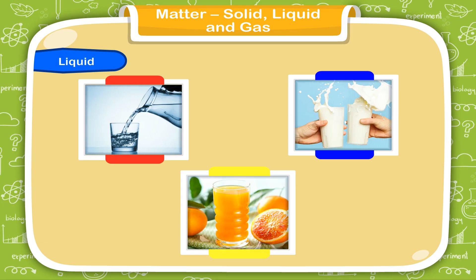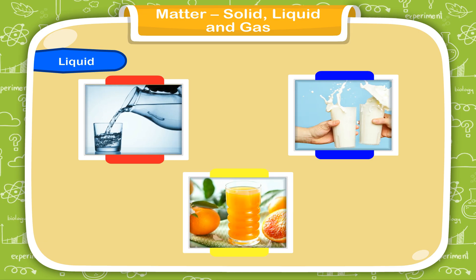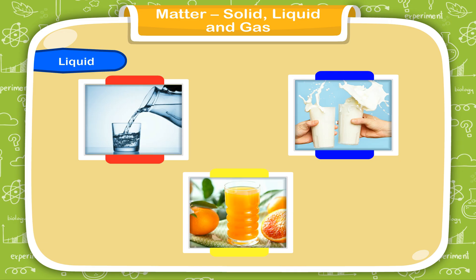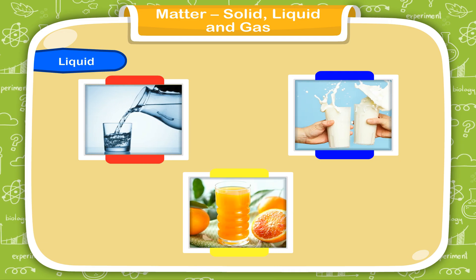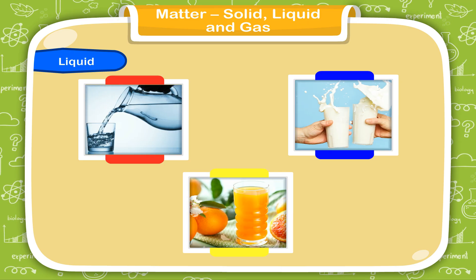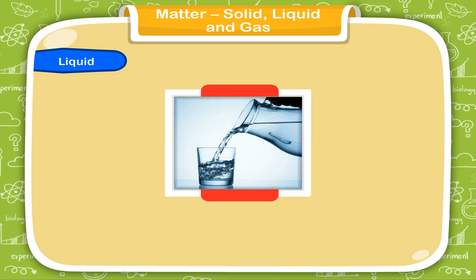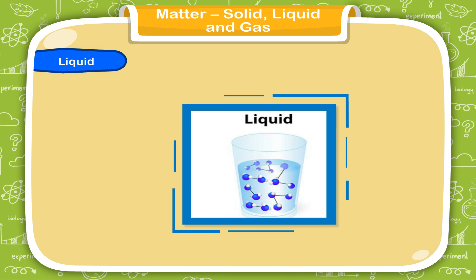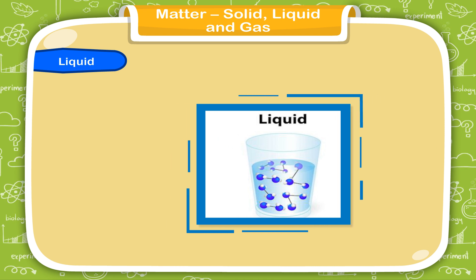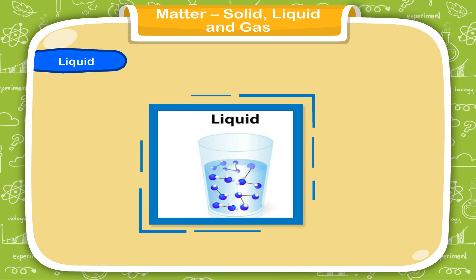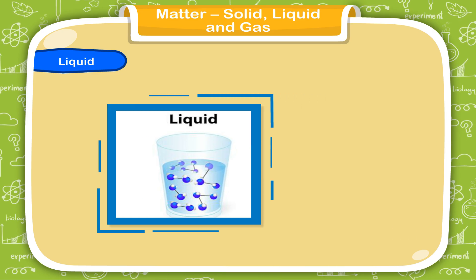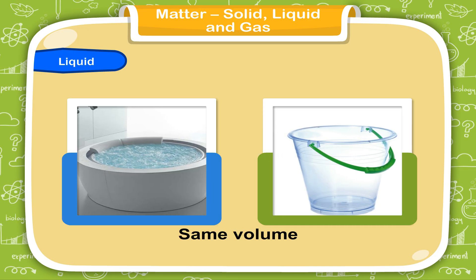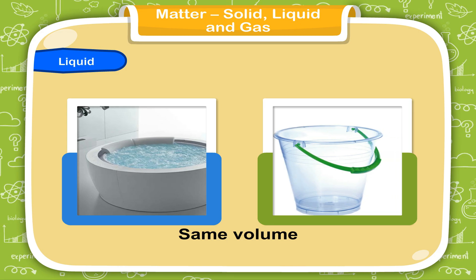Liquid: Another state of matter is liquid. You drink water, milk and juice. All of them are liquids. You cannot hold them in your hand like solids. They do not have a fixed shape. They take the shape of the container in which they are kept. If you pour some water into a glass, it will take the shape of the glass. They can flow. In liquids, the molecules are loosely packed and have space between them. The molecules can move around a little freely. Liquids have a fixed volume. One litre of water will remain one litre, whether you pour it in a tub or in a bucket.